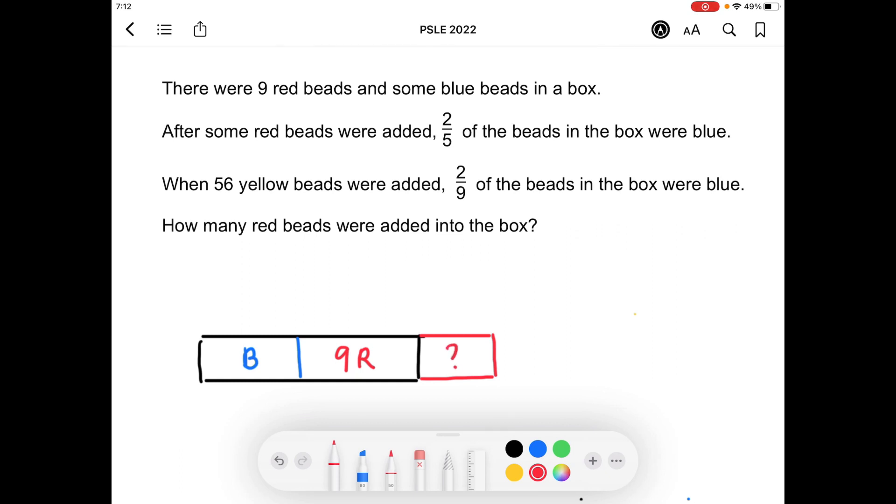And 2/5 of the bits in the box were blue after that. So that means this is 2 units. This will have to be 3 units because if 2 units are blue, the remaining 3 units will have to be red.